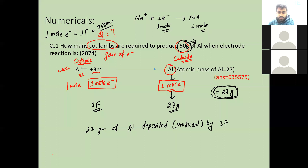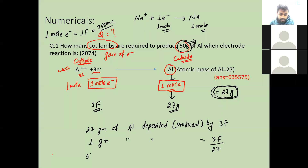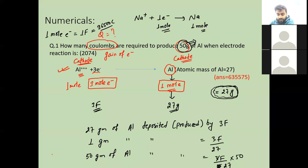For 50 grams of aluminium: Q = 3 × 96500 × 50 divided by 27. So the calculation gives Q = 96500 × 50 / 27 × 3. The answer is approximately 536222.2 coulombs.